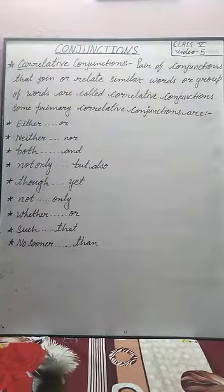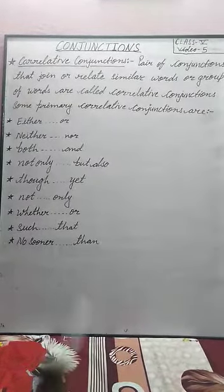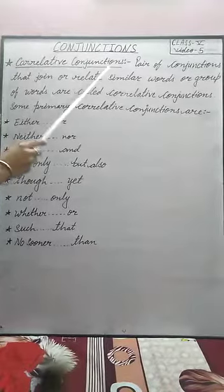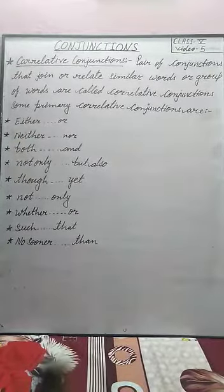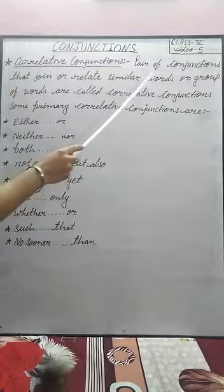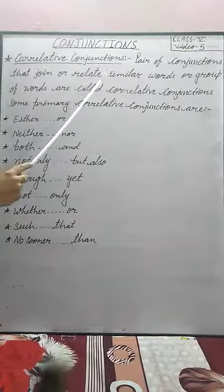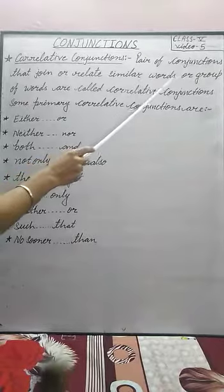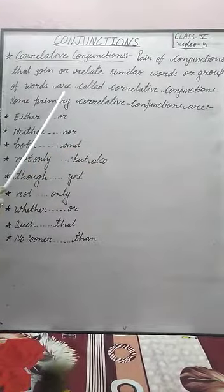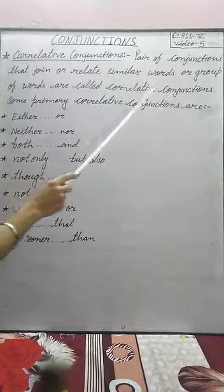In today's class, we will learn about correlative conjunctions. What is correlative conjunction? Pair of conjunctions that join or relate similar words or group of words are called correlative conjunctions.